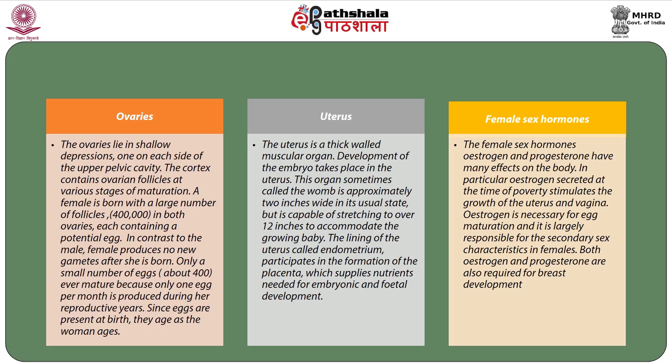The uterus is a thick-walled muscular organ where the development of the embryo takes place. The organ, sometimes called the womb, is approximately 2 inches wide in its usual state but is capable of stretching to over 12 inches to accommodate the growing fetus. The lining of the uterus, called the endometrium, participates in the formation of the placenta, which supplies nutrients needed for embryonic and fetal development.